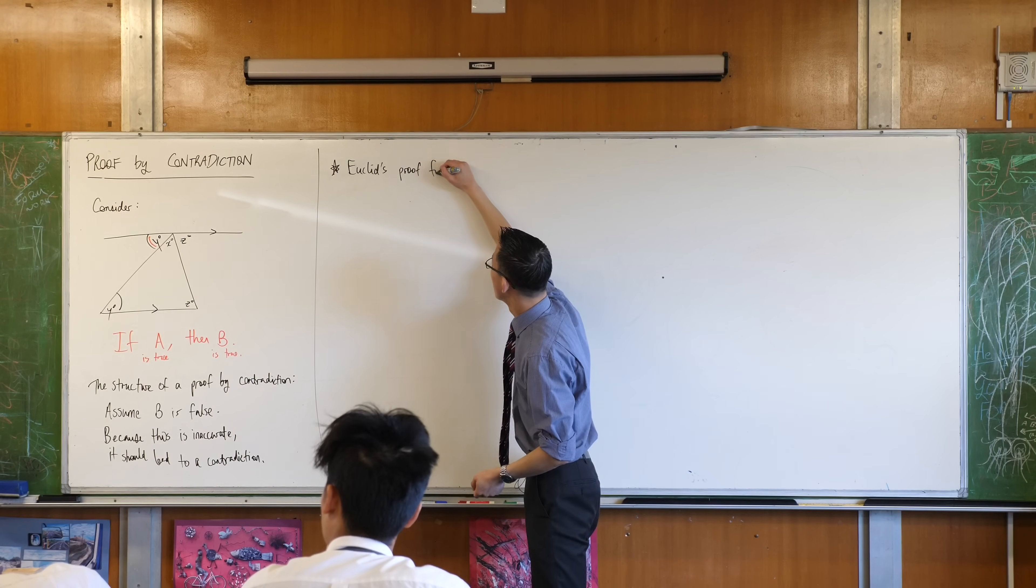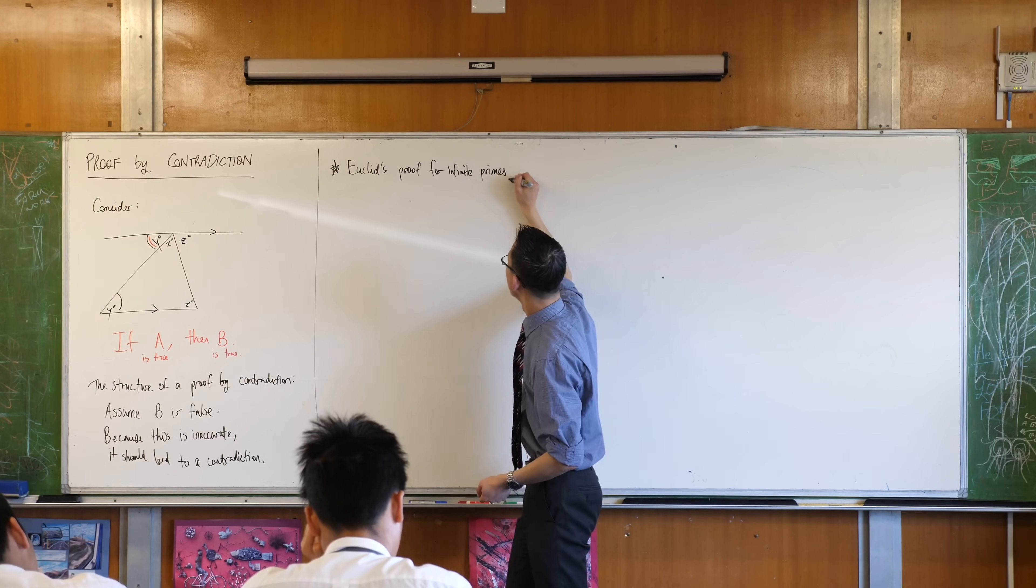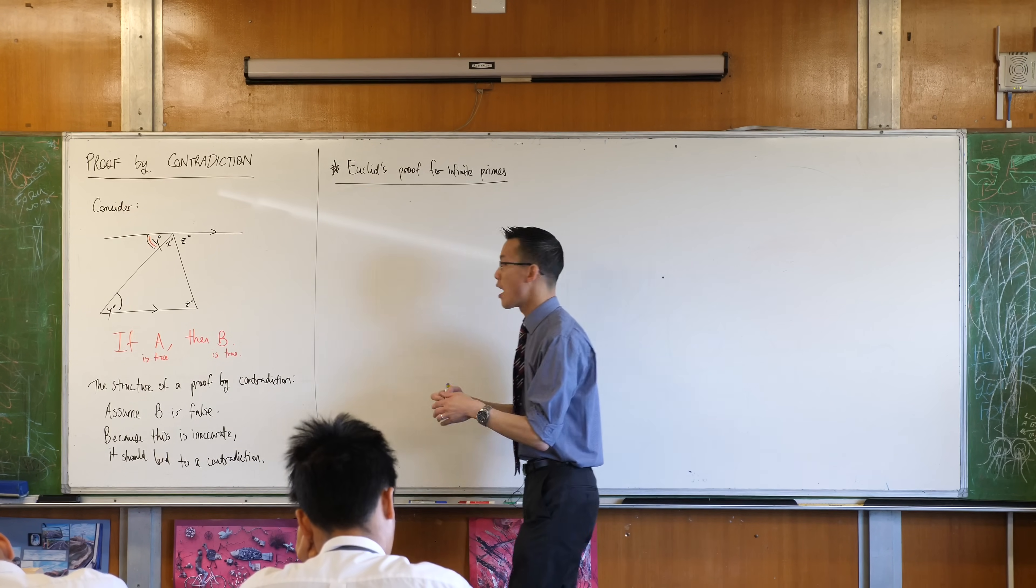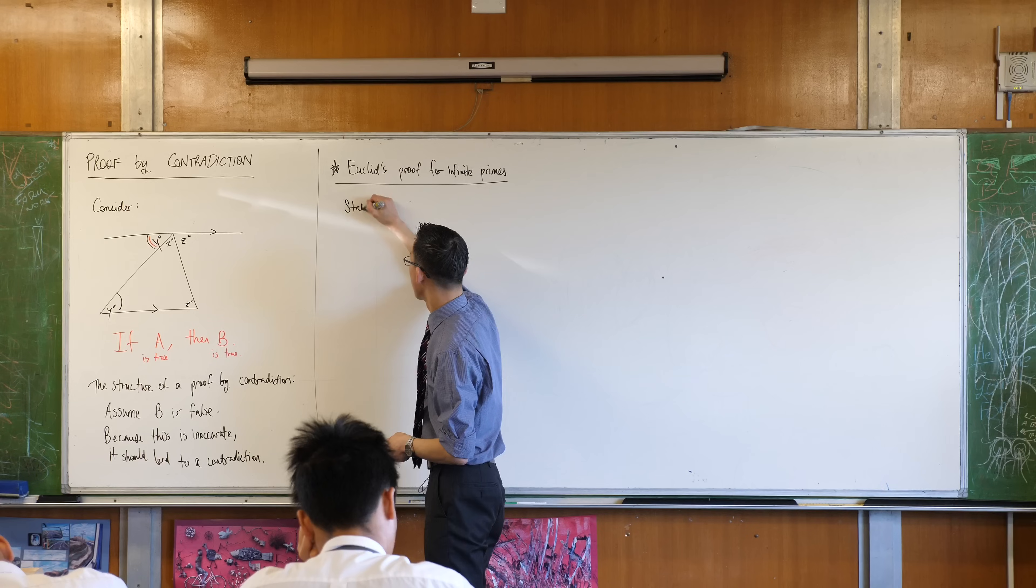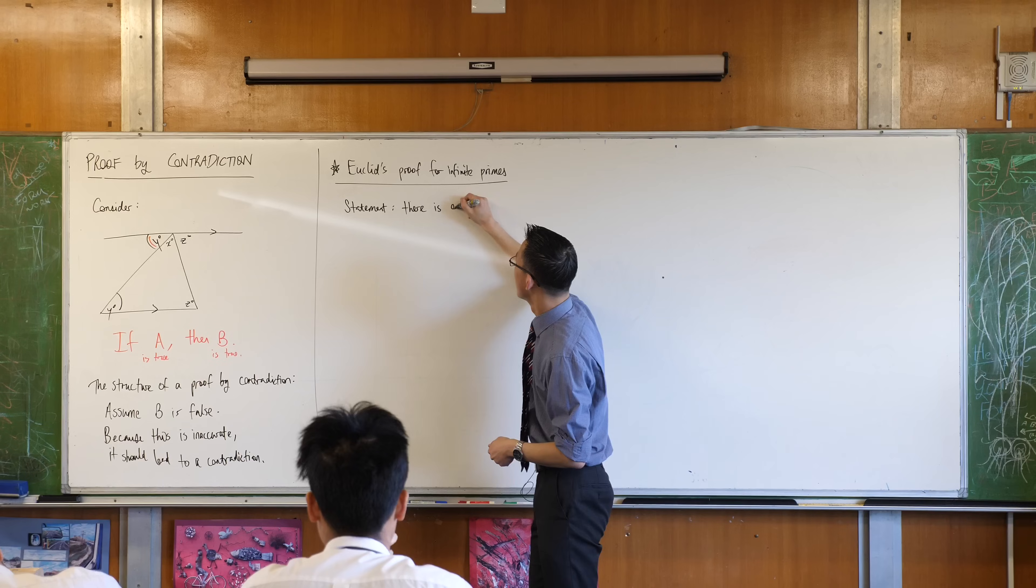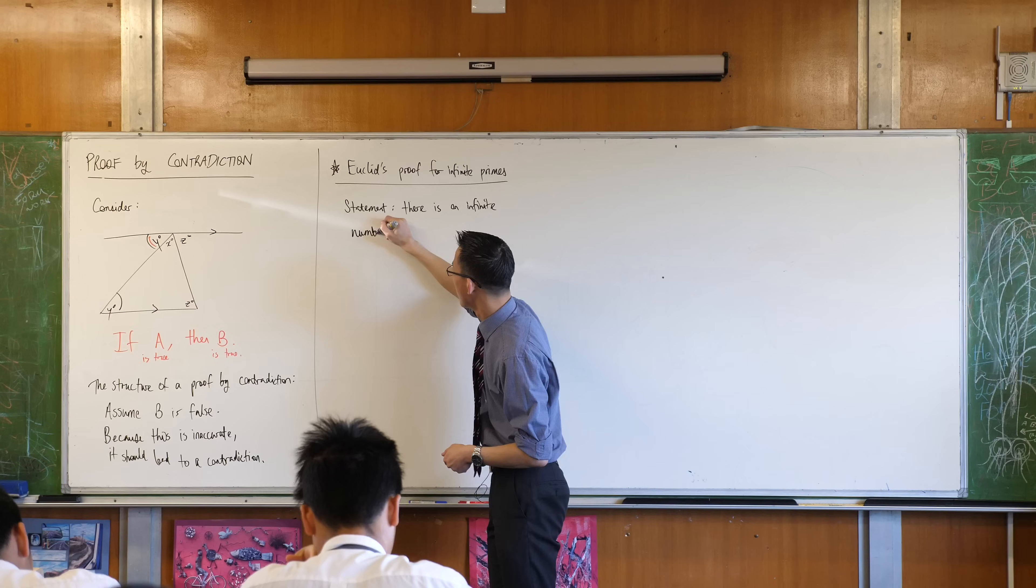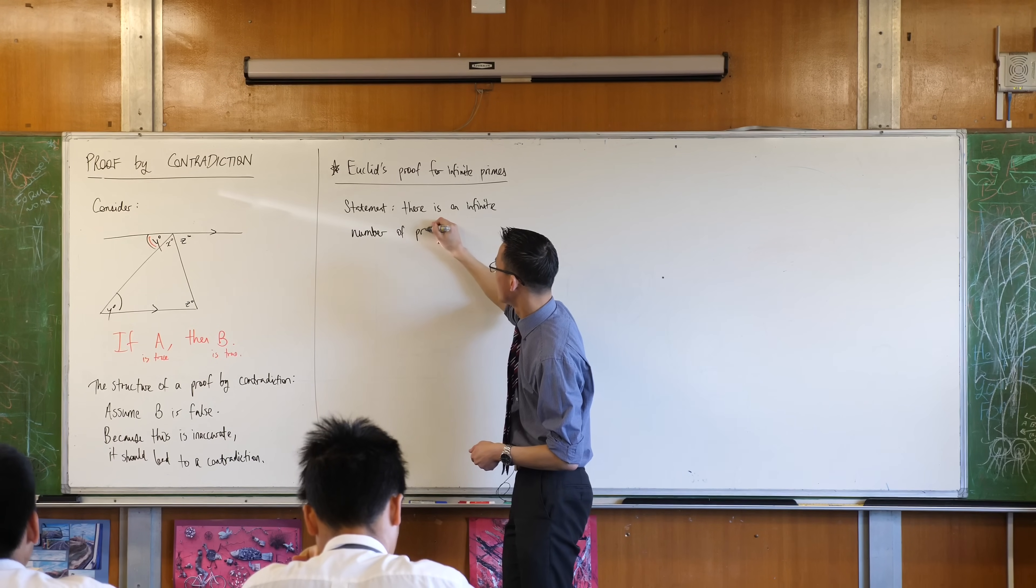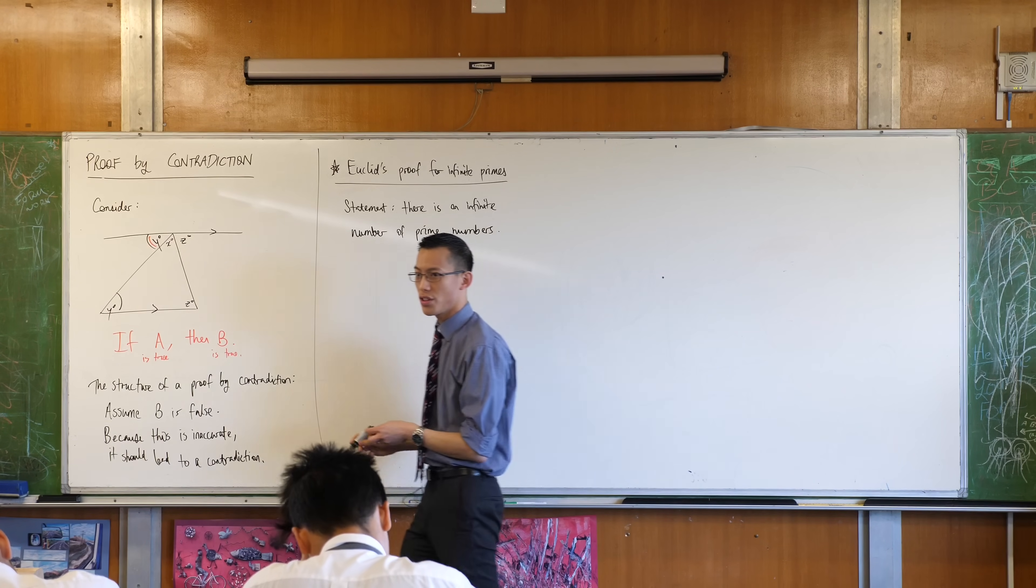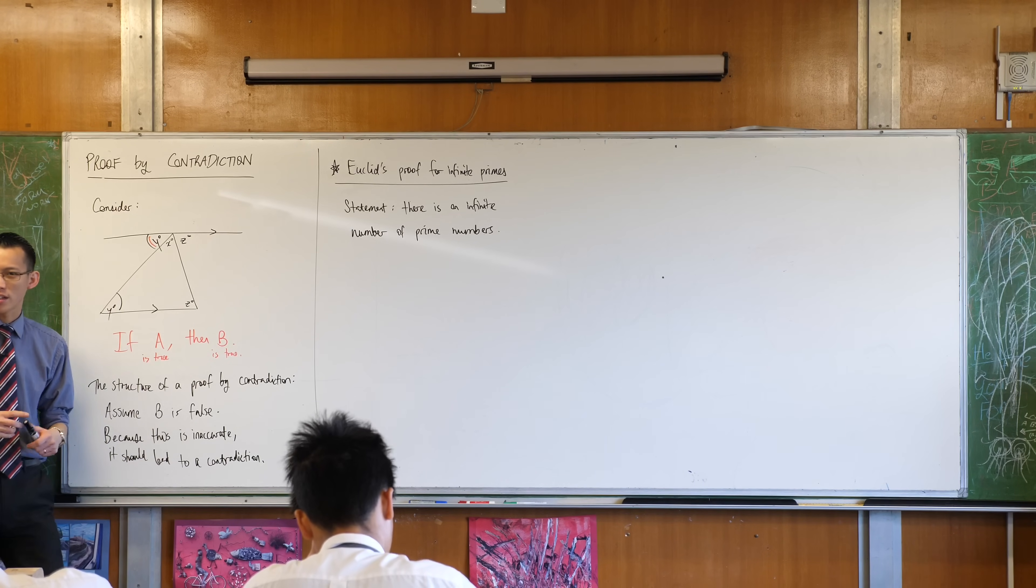So this is Euclid's proof for infinite primes. Okay, so here's the statement we're going to try and prove. Statement: there is an infinite number of prime numbers. Now I just want to pause for about 30 seconds. I just want you to think, how would you even begin on trying to prove such a thing?